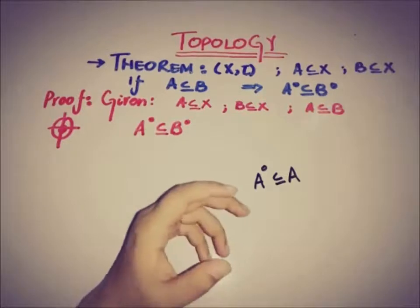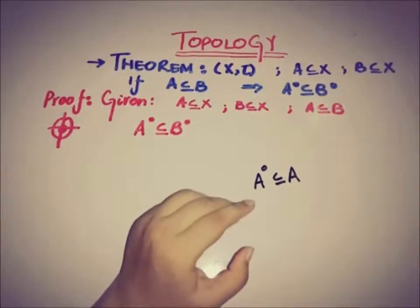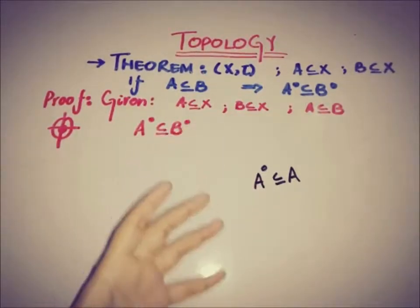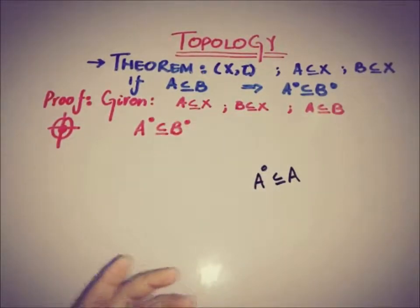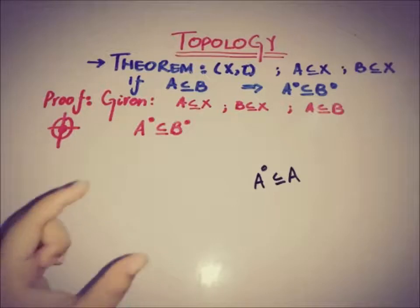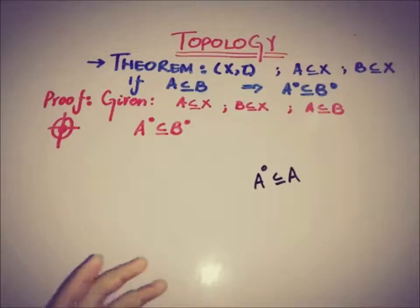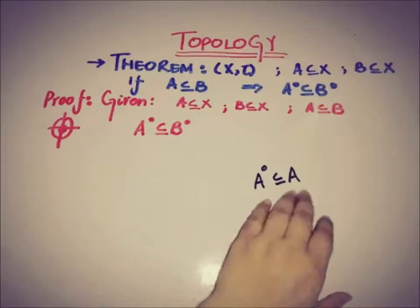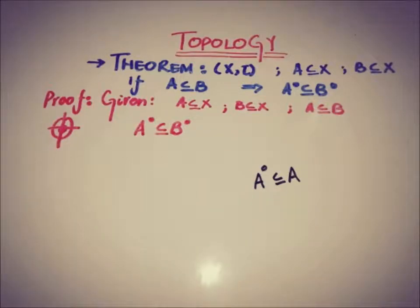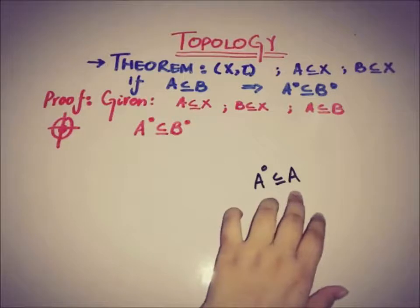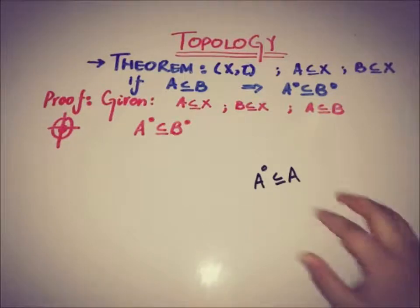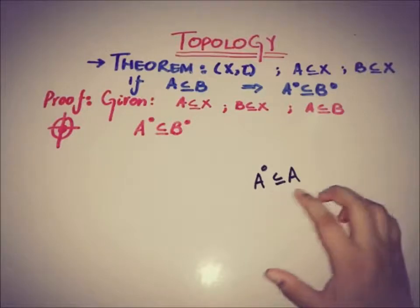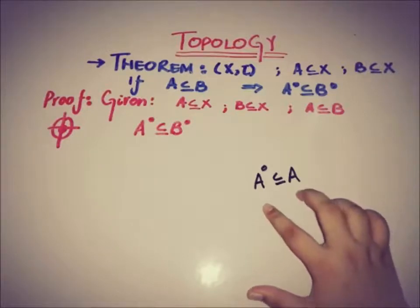We are not saying that A is a subset of the interior — we are saying that the interior of A is a subset of A. Because when we talk about the largest open set, the definition concerns the open set. If A is open, then the interior of A equals A. In general, when A is not an open set, by definition the interior of A is a subset of A.